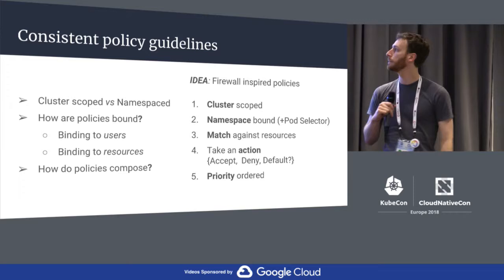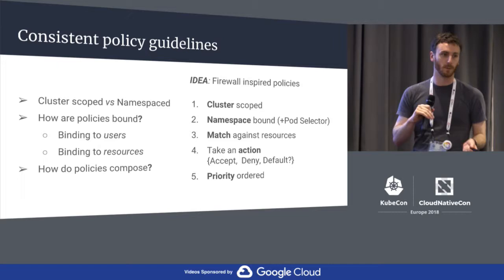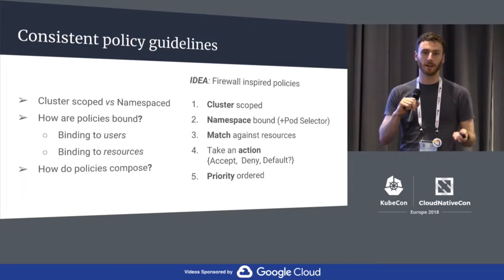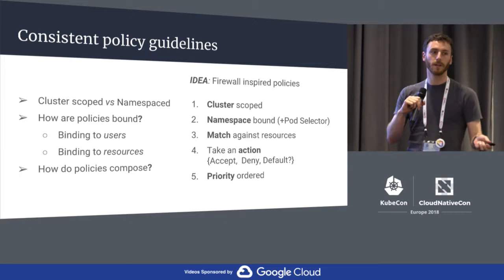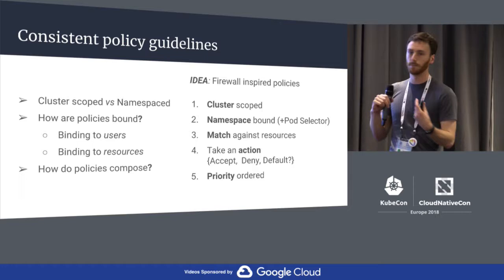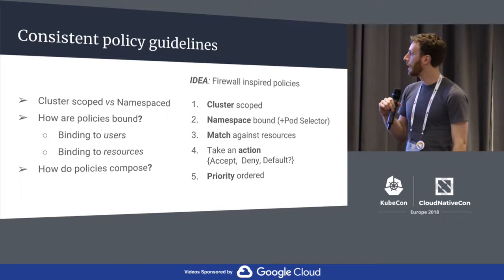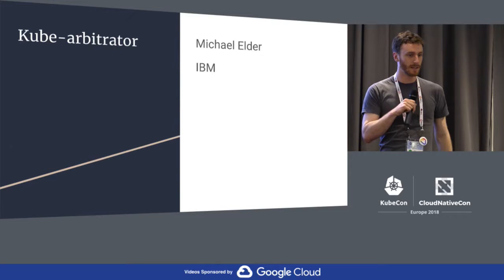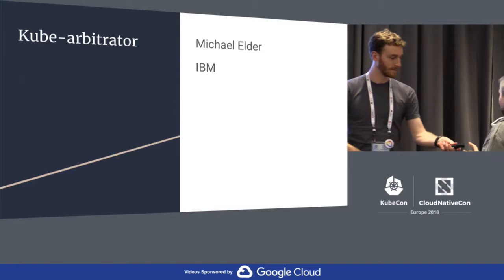One idea we've been throwing around is taking inspiration from the way firewalls are designed — having policies that match objects and then taking an action when the policy is matched. That might be accept, allow this request or action, or deny. We've also been debating whether defaulting should be handled by policy management or mutations in general. I think that's all I had to say about that — we'll do questions at the end.